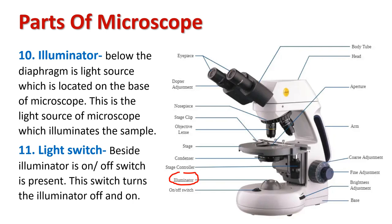Below the diaphragm is the illuminator, which is the light source located on the base of the microscope. It illuminates the sample and is basically a bright white light bulb or LED. Beside the illuminator, there is an on/off switch that turns the illuminator off and on.